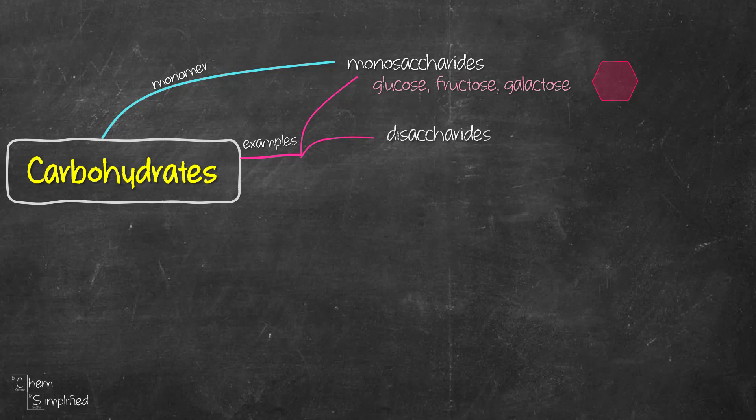Di in disaccharide refers to two. So disaccharide means it's made out of two monosaccharides joined together via a carbon oxygen-carbon bond, which is called glycosidic linkage. Some examples of disaccharides are sucrose, maltose, and lactose.